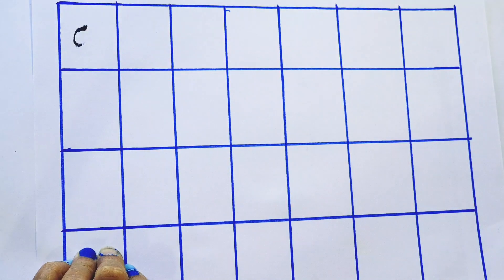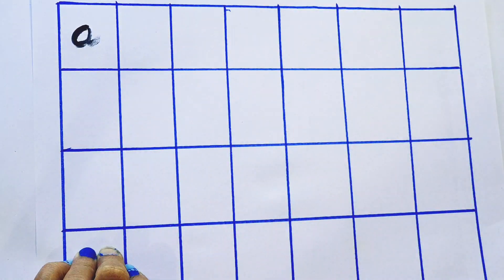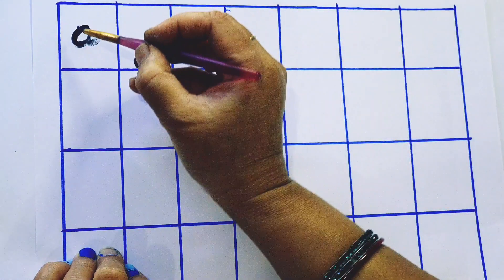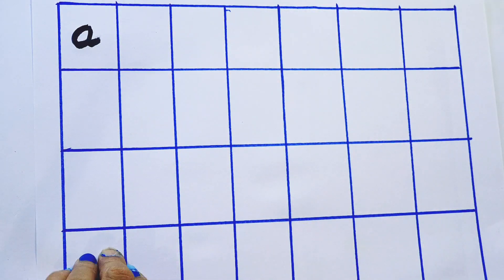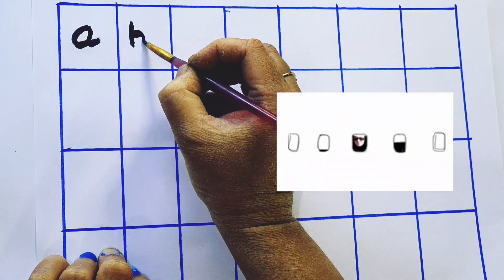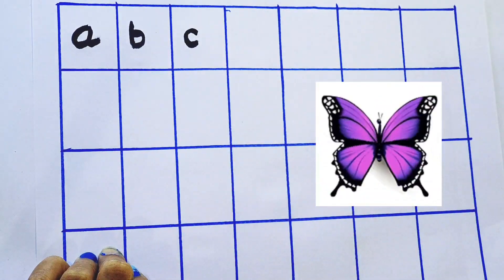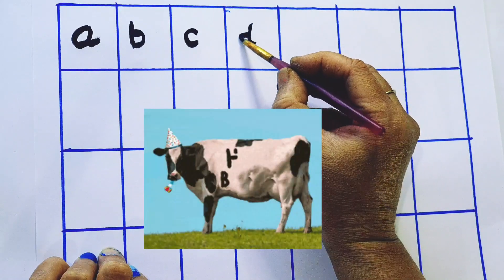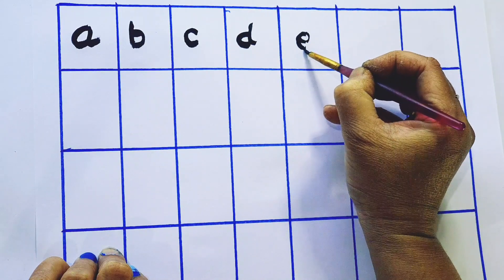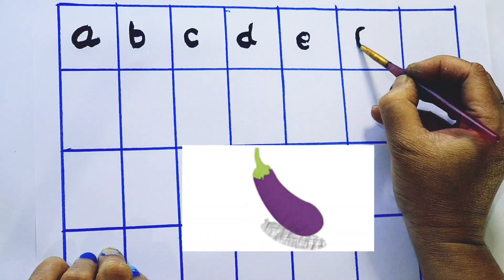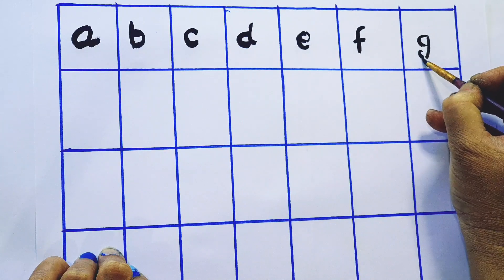A for aeroplane, B for butterfly, C for cow, D for dog, E for eggplant, F for frog, G for guava.